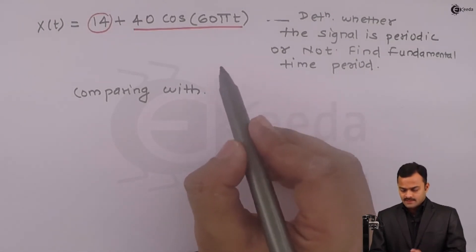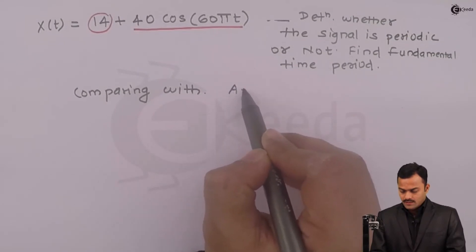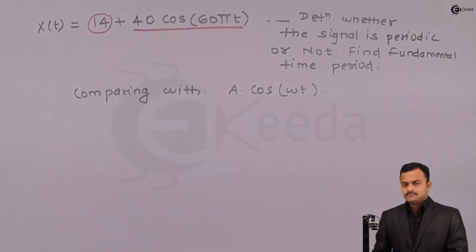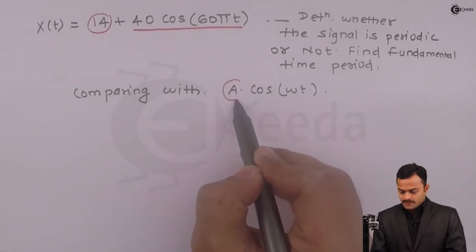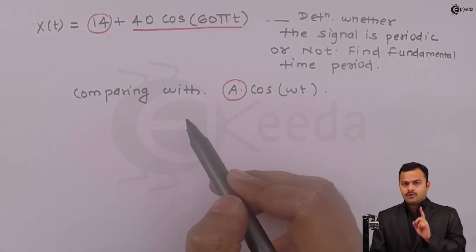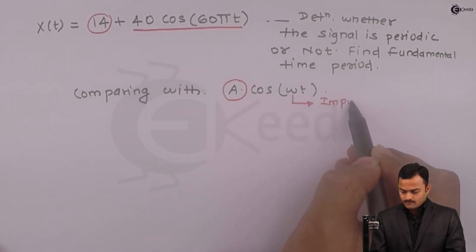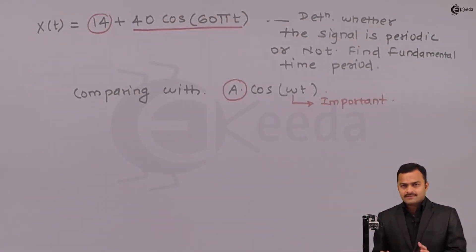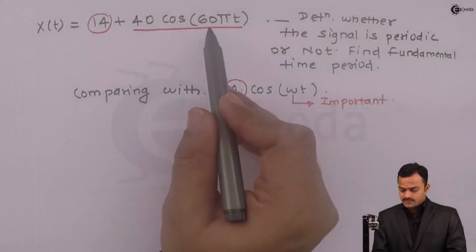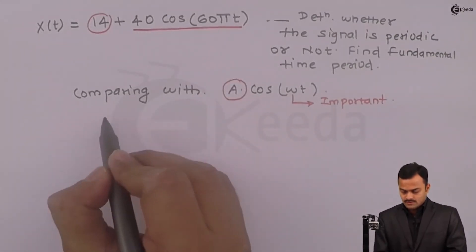Let's forget about the constant. I will compare the signal with A cos(ωt). So over here, even this A is not playing the role. The important part or important element is this omega. So forget about the rest. I will just concentrate on what is the value of omega.